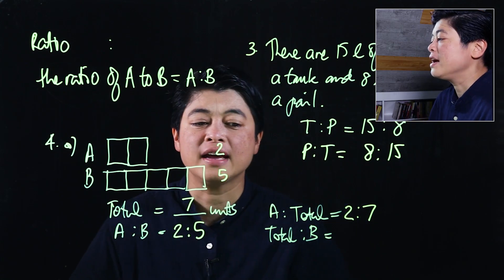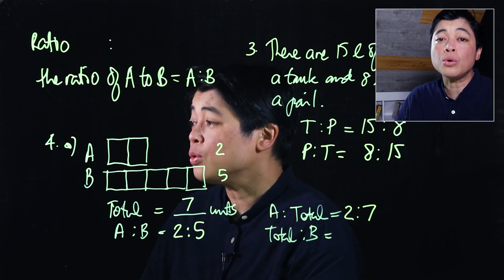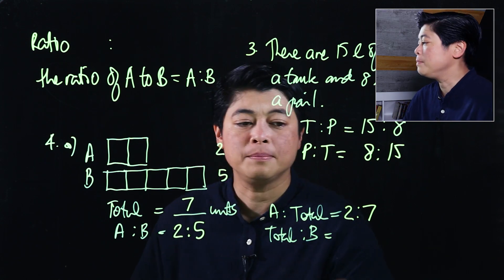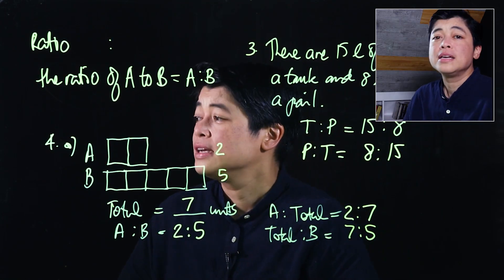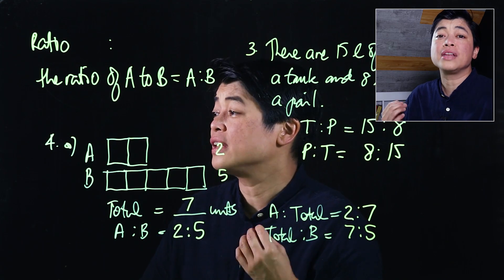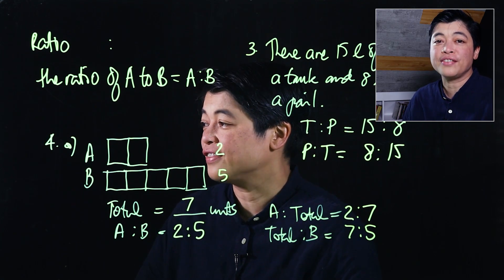Finally, the last question asks for the ratio of the total to b. The total being seven units and b being five units, the ratio of the total to b would be 7:5.